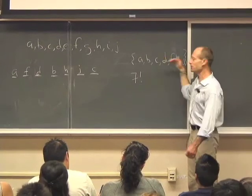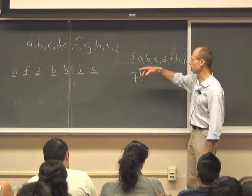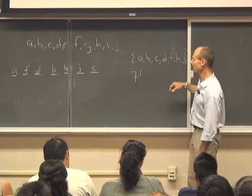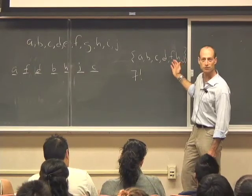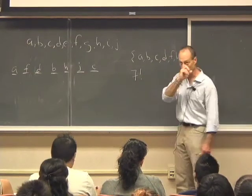Having picked that, I have six choices for what to put second, might be the F. Having done that, I have five choices for what to put third, might be the D, et cetera. That would lead to that particular permutation.